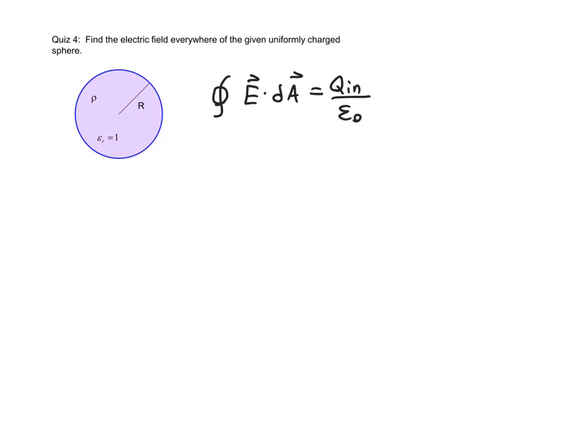This is the equation for Gauss's law here, and we can reduce that to EA equals Qin over epsilon naught.